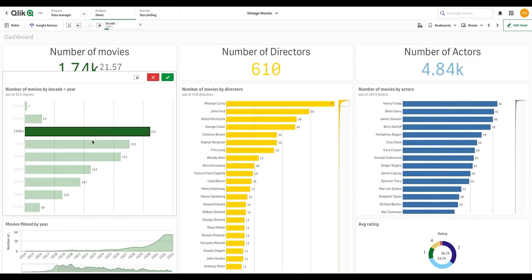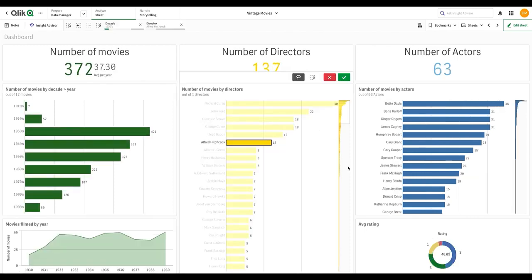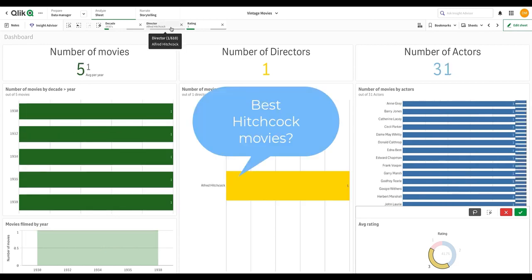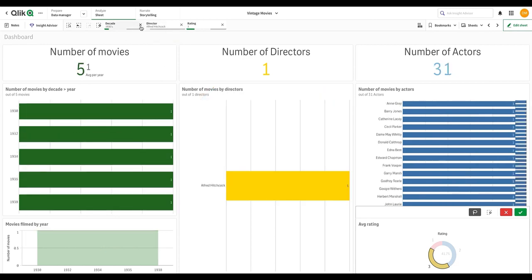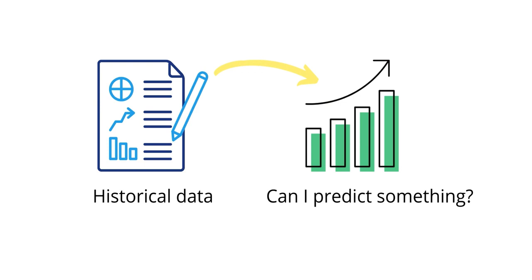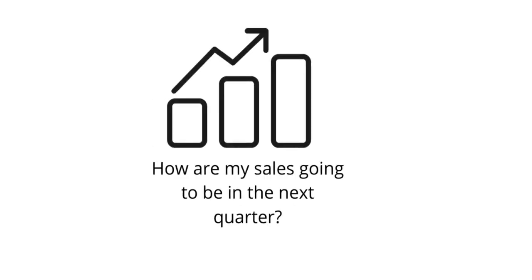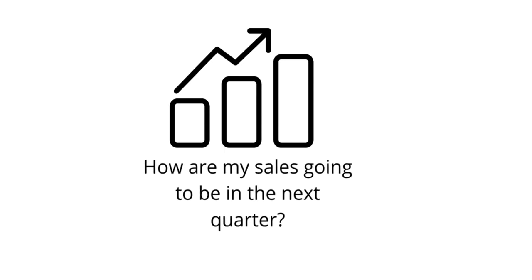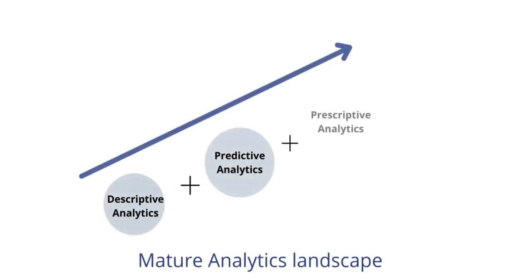Descriptive analytics has been around for a while. It allows organizations to derive insights to know what happened in the past and take actions based on it. However, there are scenarios when you would like to have an idea of what might happen in the future based on your historical data — for example, sales forecasting. This is where the power of predictive modeling comes into play. In the modern analytics landscape, integrating machine learning techniques with BI can be quite beneficial to organizations.